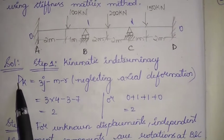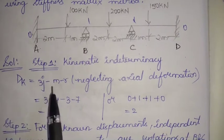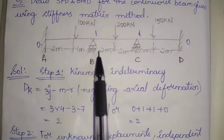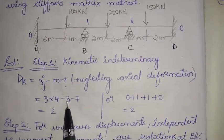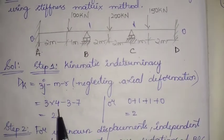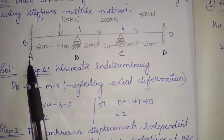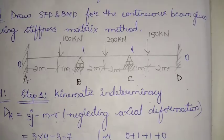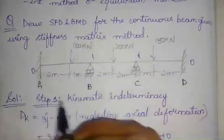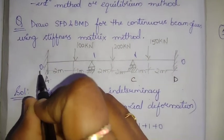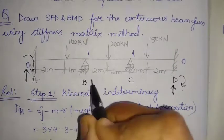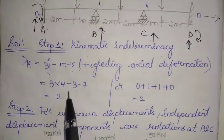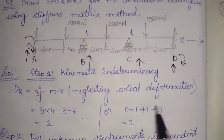The formula is: dk (degree of kinematic indeterminacy) equals 3j minus m minus r, where j is joints, m is members, and r is reactions. We have four joints, three members (AB, BC, CD), and when neglecting axial deformations, r equals 7. So dk equals 3×4 minus 3 minus 7, which gives two.